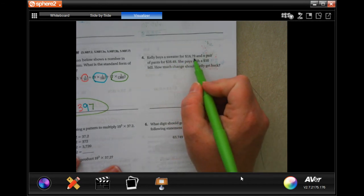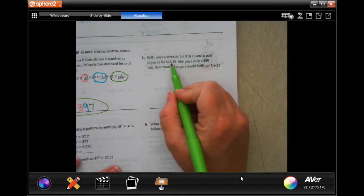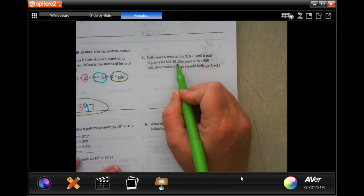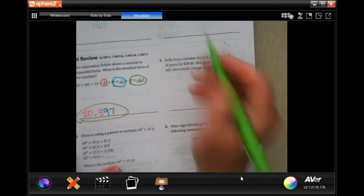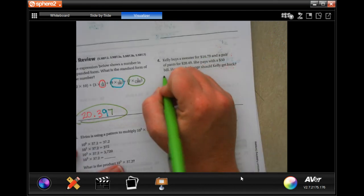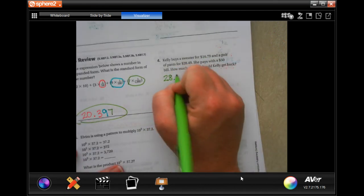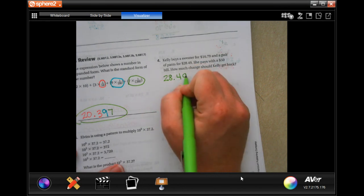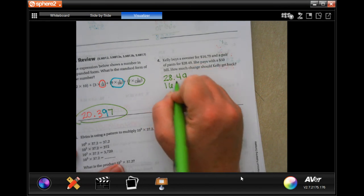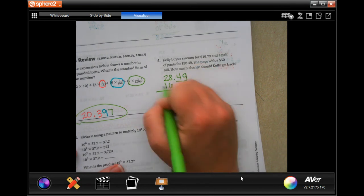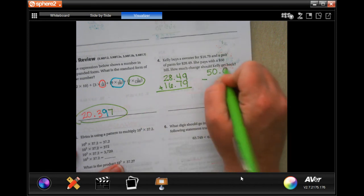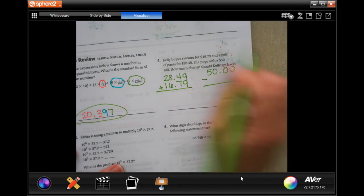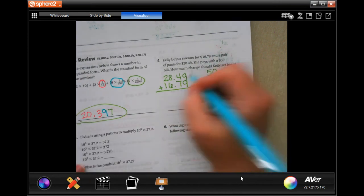Kelly buys a sweater for $16.79 and a pair of pants for $28.49. She'll pay with a $50 bill. How much change should she get back? First you need to know how much she spent, so we're going to add up 28.49 and 16.79, then we're going to subtract that from the 50.